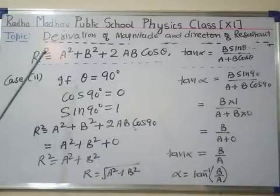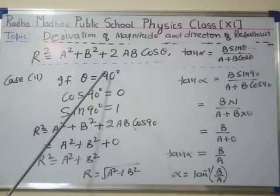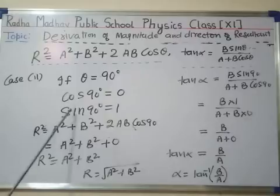Now the second case, when the angle between vector A and vector B is 90 degrees. As we know, cos 90° equals 0 and sin 90° equals 1.